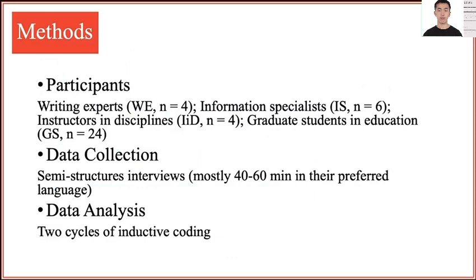To address the above-mentioned research purpose, this study interviewed four groups of stakeholders: writing experts, information specialists, content instructors, and students. Instructors and graduate students in one discipline were selected because relevant constructs — information literacy and academic writing — are discipline-specific, meaning different disciplines may have different expectations for information-based academic writing.